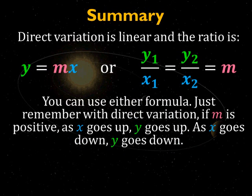In summary, direct variation is linear, oftentimes. Y equals MX or Y1 over X1 equals Y2 over X2 equals M. You can use either formula. In some problems you want to solve for M and then you plug and simplify. Here, you can just skip the M step if all you want to know is the amount of Y2 or X2 given the amounts of X1, Y1. Just remember, if M is positive, as X goes up, Y goes up. As X goes down, Y goes down. That is direct variation of proportion. Good luck on the homework.